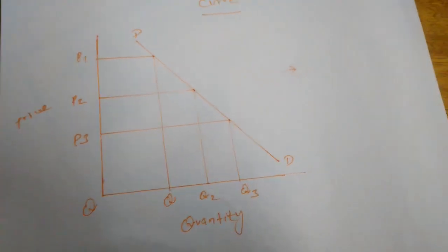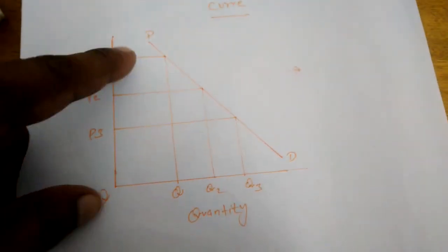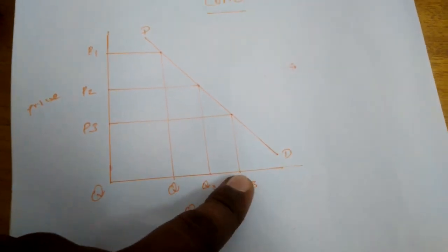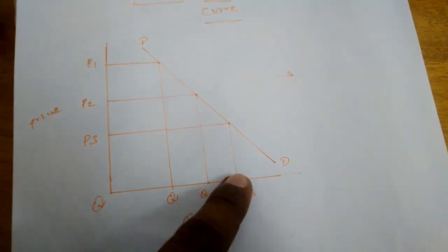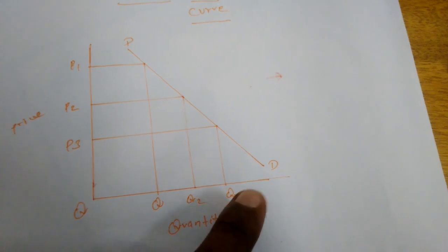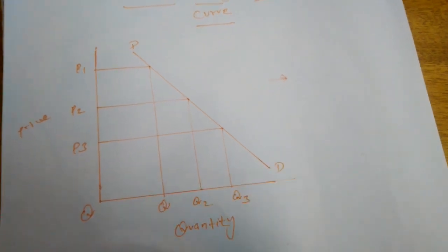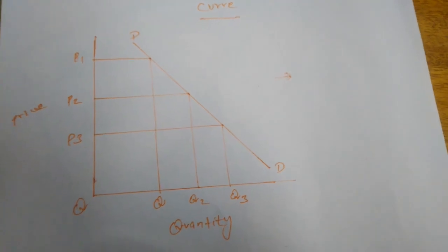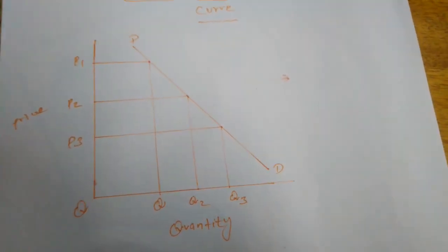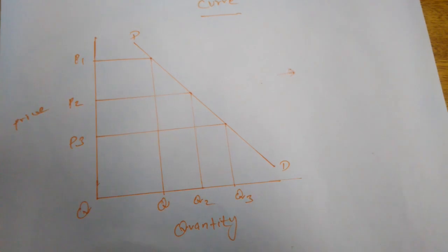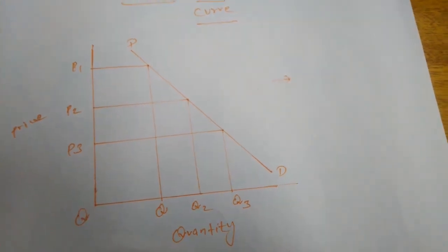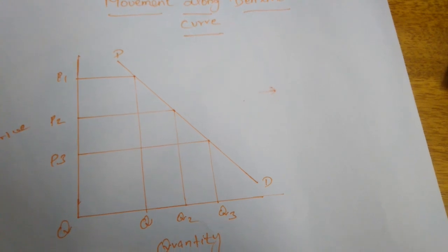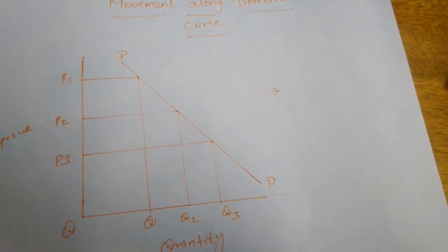Along the demand curve, the quantity demanded of a commodity will increase or decrease. The demand curve will not change — it will be constant. The quantity demanded changes only by reason of price. That is called extension or contraction of demand.